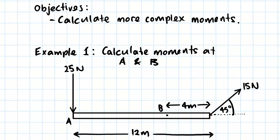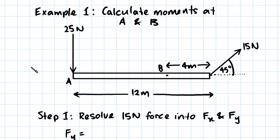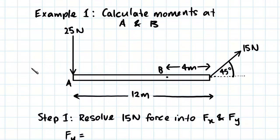Hey guys, the objectives of this video are to calculate some more complex moments. The example we've got to start with is a beam that is 12 meters long and it has two forces acting on it. It has one 25 Newton force acting at point A and one 15 Newton force acting at a 45 degree angle at the opposite end.